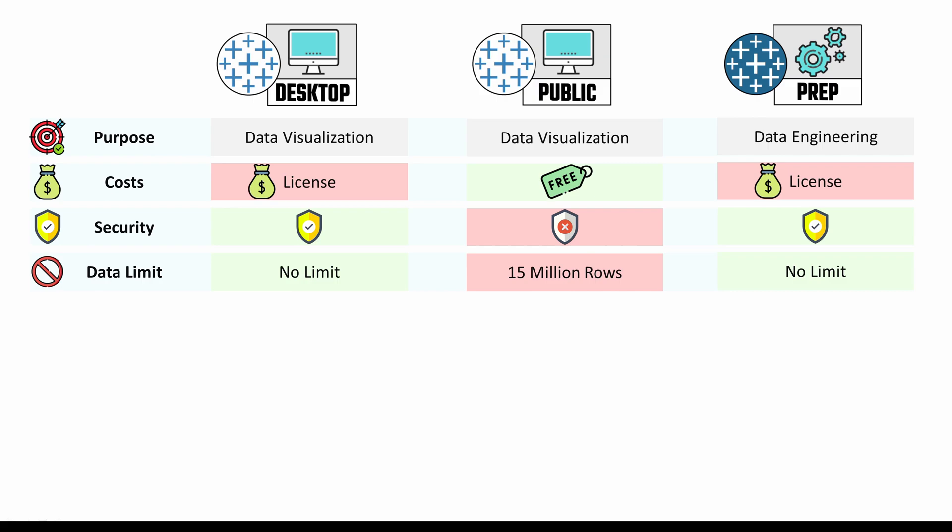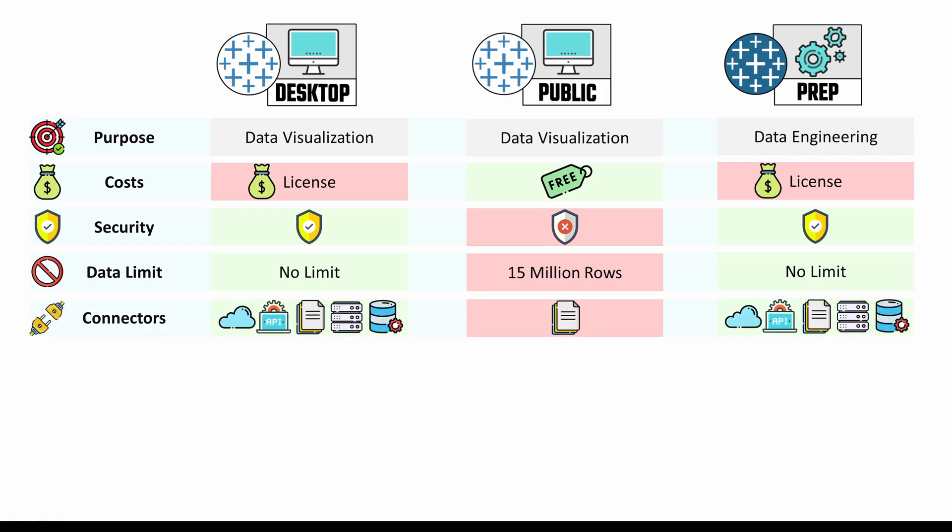The next point is data limits. Since Public is free, it comes with a limitation of 15 million rows, but Desktop and Prep have no limitations. For connectors, in both Desktop and Prep you have over 90 different data connectors — like files, API, servers, cloud, and so on —